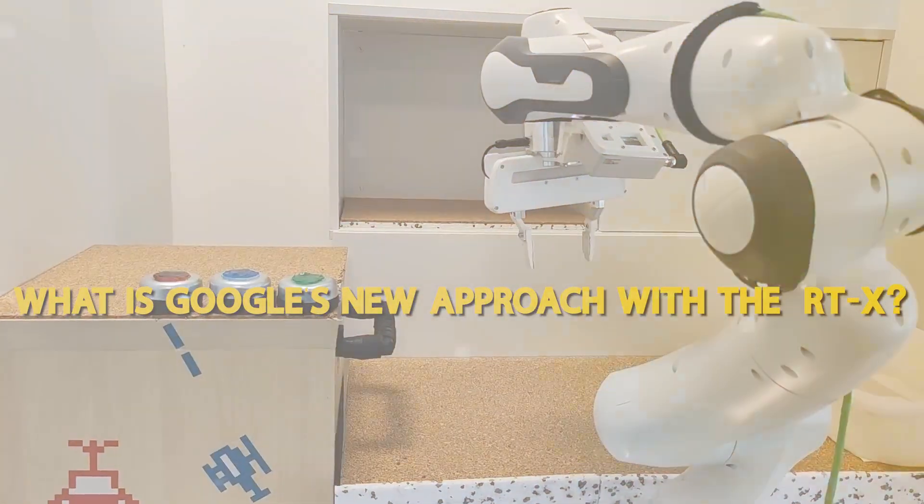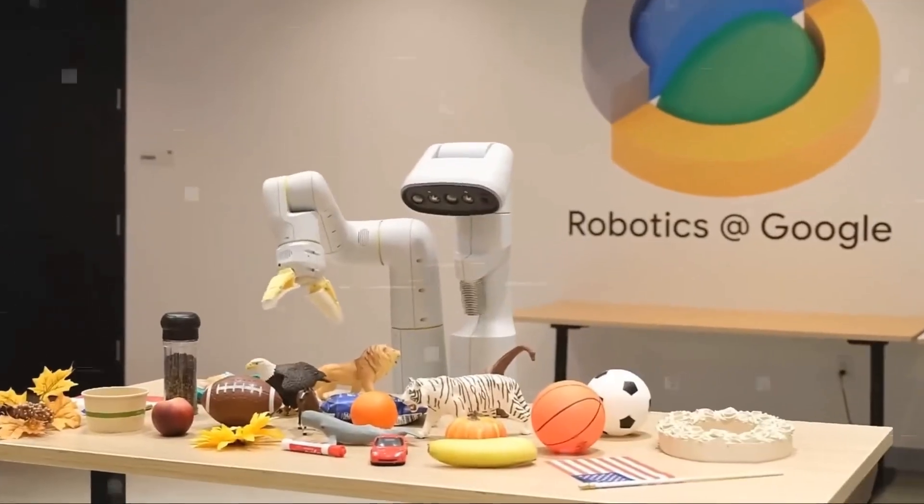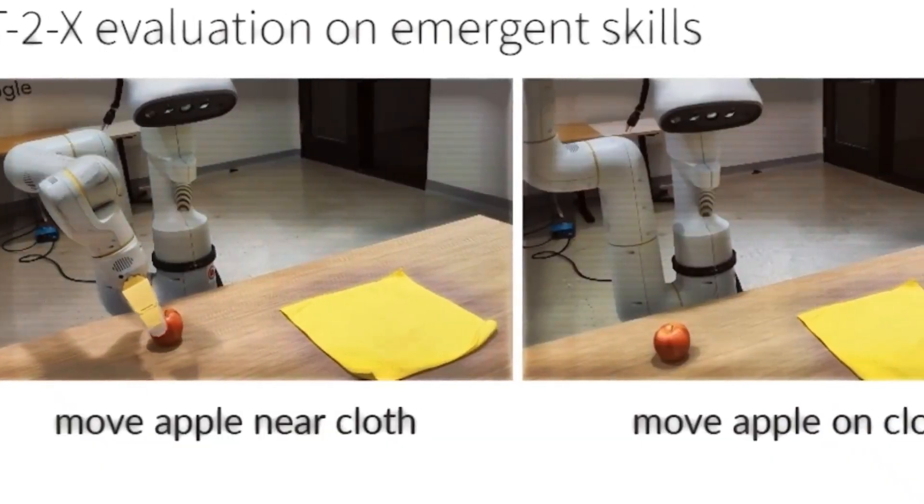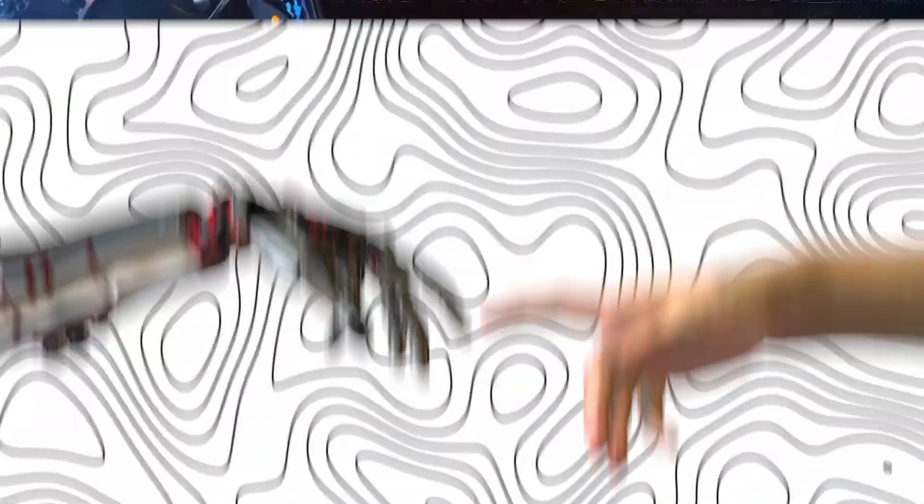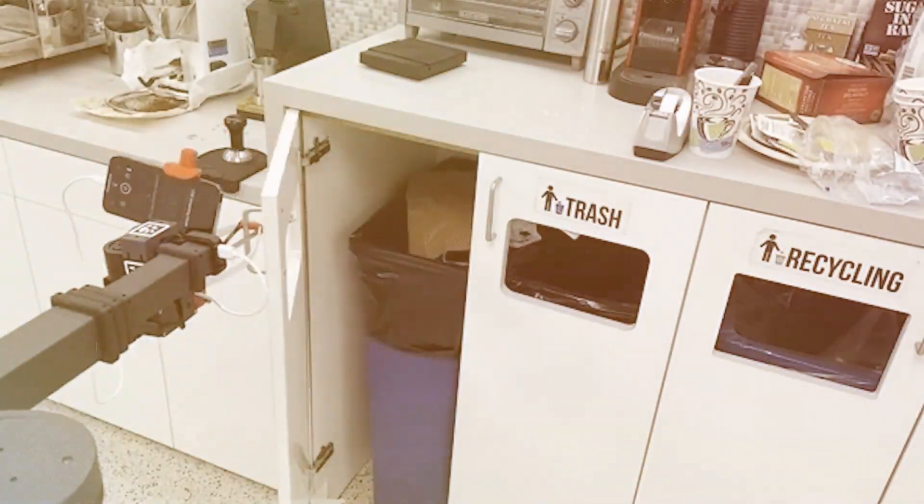What is Google's new approach with the RTX? Recent research has enhanced robot reasoning, even allowing them to apply chain-of-thought prompting, a method for dissecting multi-step problems. The emergence of vision models such as PaLM-E aided robots in better understanding their surroundings.